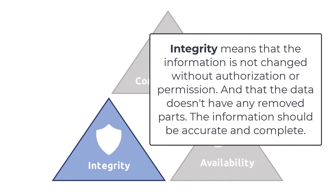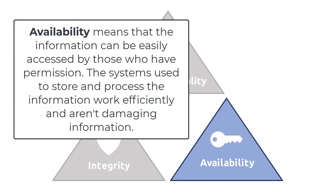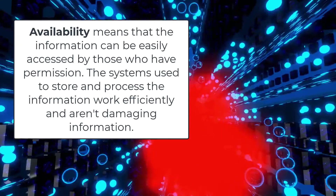Integrity means that the information is not changed without authorization or permission, and that the data doesn't have any removed parts. The information should be accurate and complete. Availability means that the information can be easily accessed by those who have permission, and the systems used to store and process the information work efficiently and aren't damaging information.